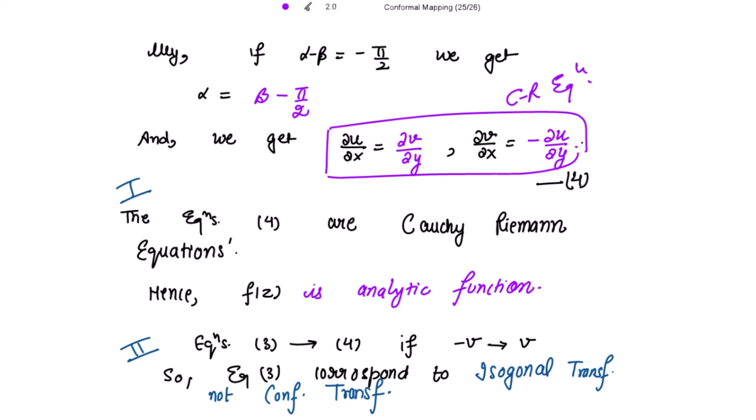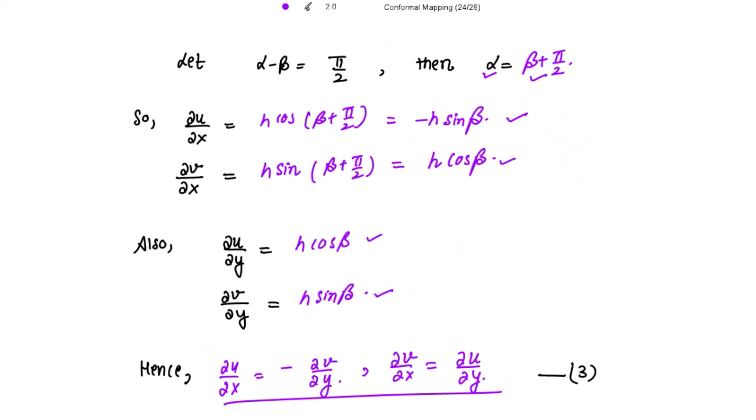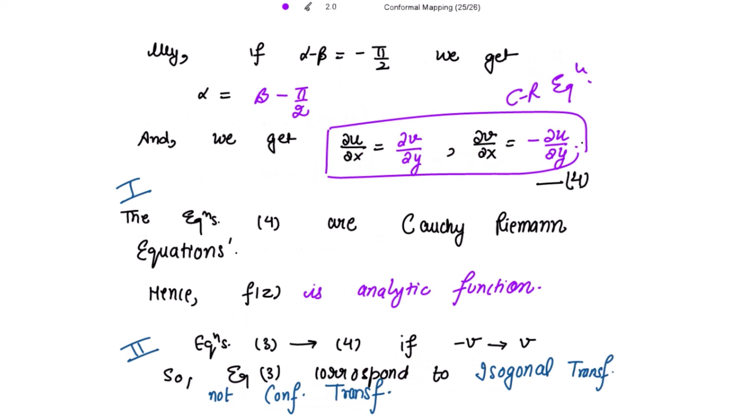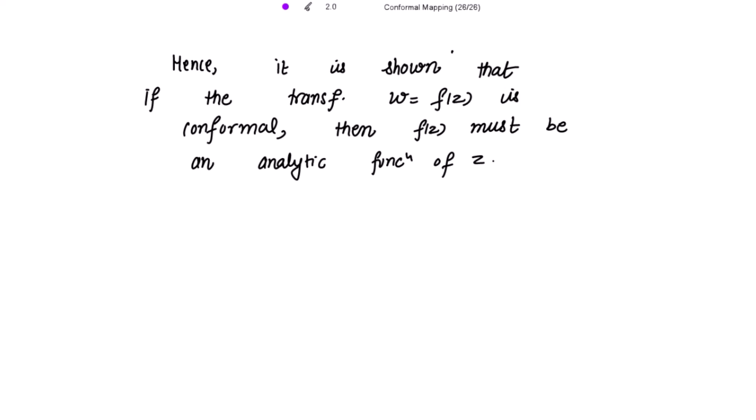Regarding equation 3: those equations become the Cauchy-Riemann equations if we replace v with −v, which corresponds to taking the image obtained by reflection in the real axis of the w-plane. So equations 3 correspond to isogonal but not conformal transformations, while equations 4 correspond to conformal transformations. Hence it is shown that if the transformation w = f(z) is conformal, then f(z) must be an analytic function of z.